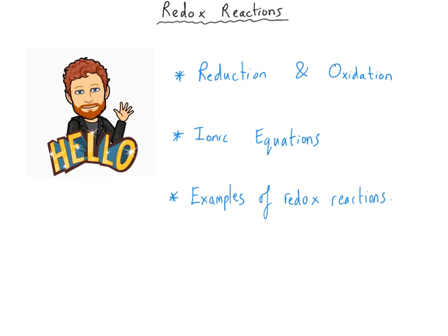Hello everybody and welcome to this GCSE chemistry video about redox reactions. In this video we will look in more detail at the two types of reaction called reduction and oxidation. We will then move on to a new type of equation called ionic equations, and we'll finish the video by looking at some examples of redox reactions, for instance displacement reactions and the reactions of metals with acids.